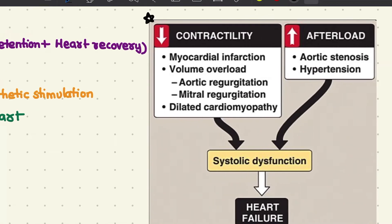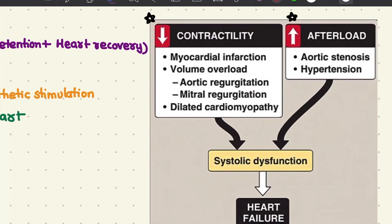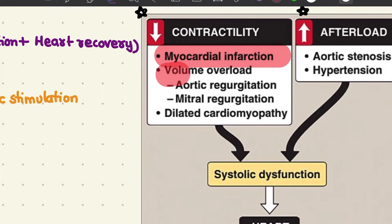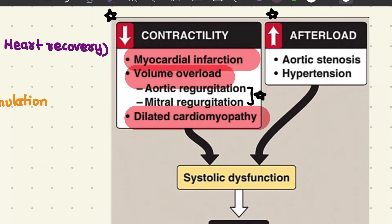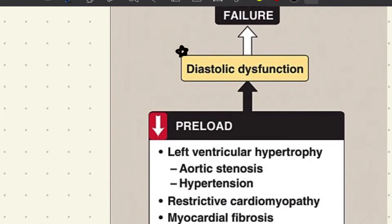Causes of systolic dysfunction include factors that decrease contractility or increase afterload. Myocardial infarction leads to weakening of heart tissue. Volume overload from valvular regurgitation — failure of a valve to close properly — causes volume overload hypertrophy, leading to a dilated, edematous heart unable to contract properly. Dilated cardiomyopathy is another cause. Factors increasing afterload include aortic stenosis and hypertension, which raise systemic vascular resistance and decrease cardiac output.